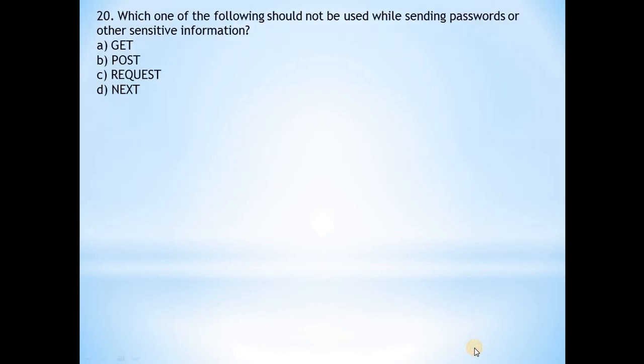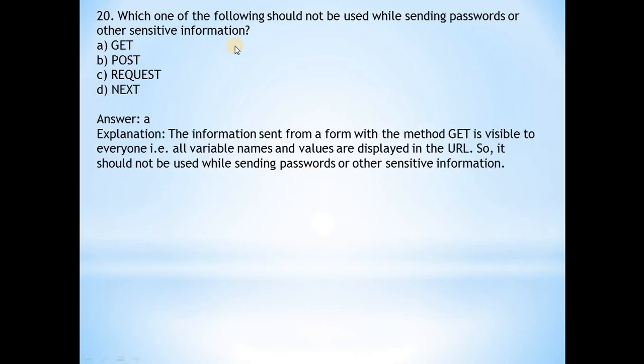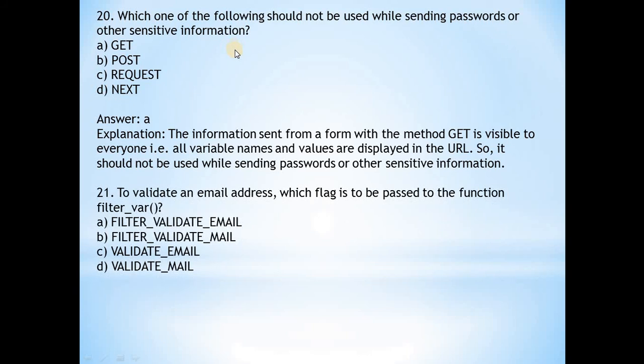Next: Which one of the following should not be used while sending passwords or other sensitive information? The answer is a, GET method. It is visible to everyone, so all variable names and values are displayed in the URL. So it should not be used while sending passwords or other sensitive information. Next question: To validate an email address, which flag is to be passed to the function filter_var()? The answer is a, FILTER_VALIDATE_EMAIL. This validates an email address.